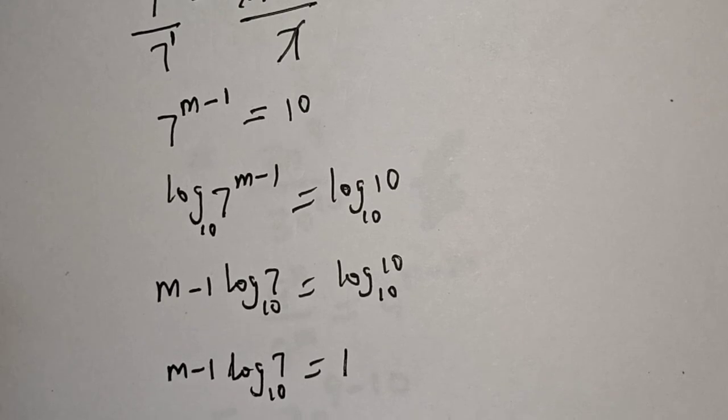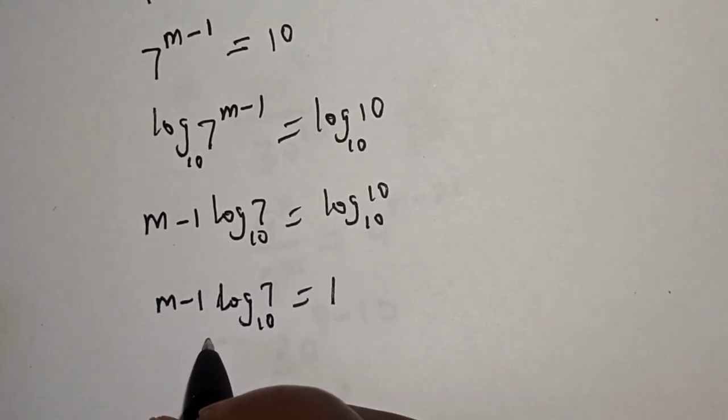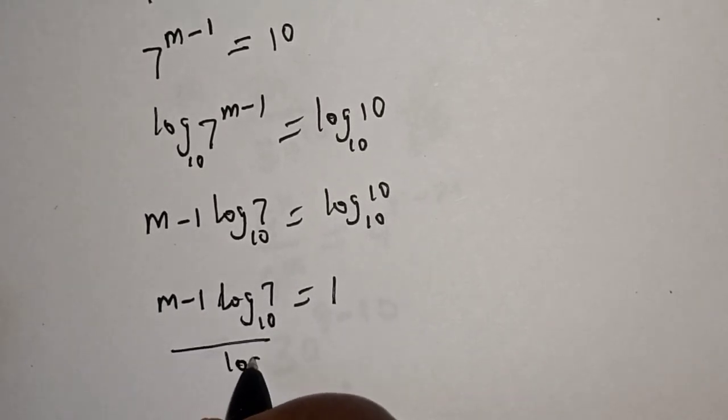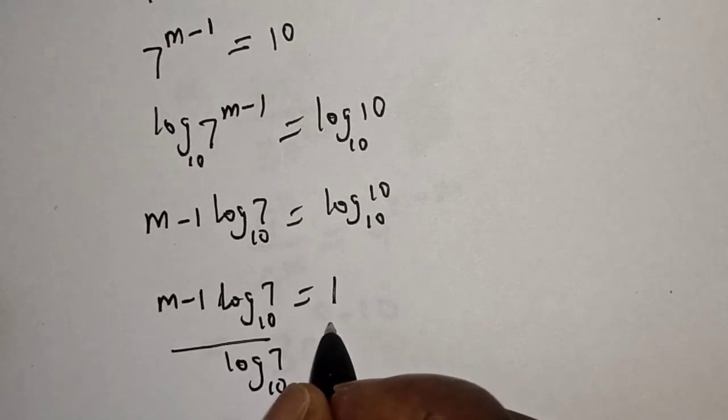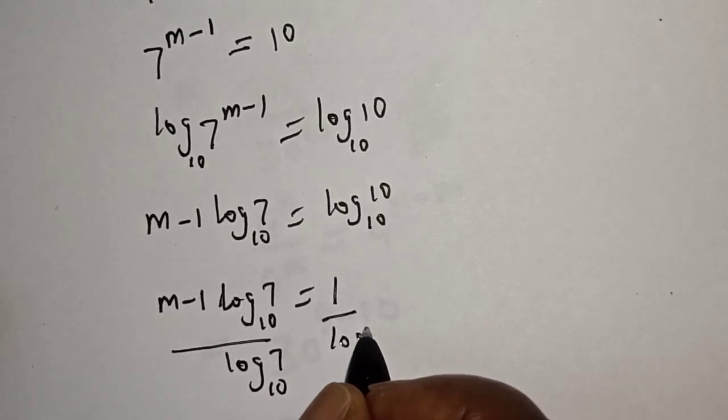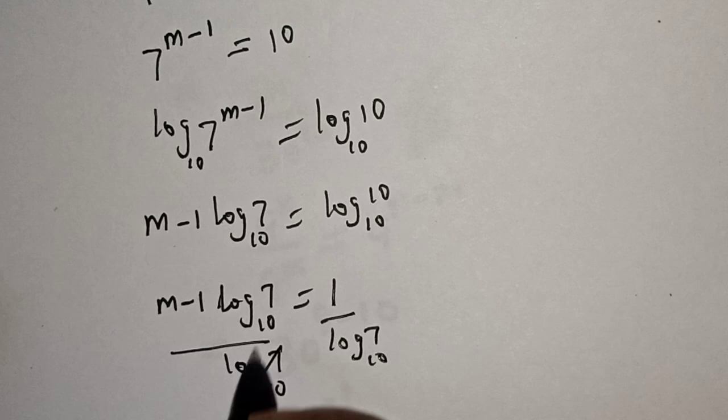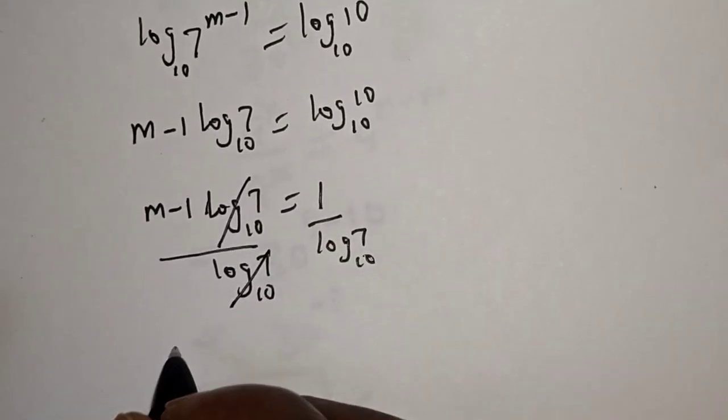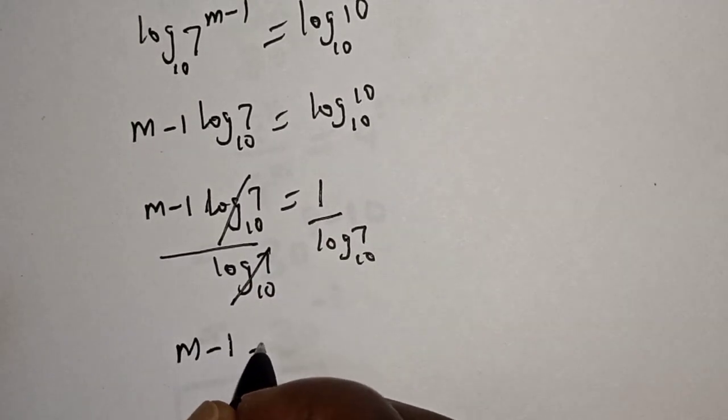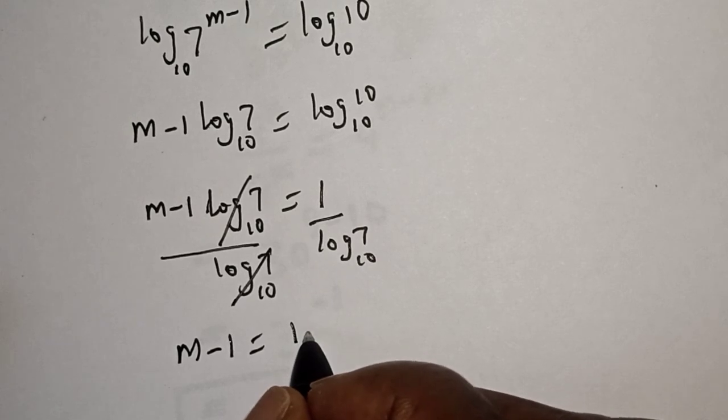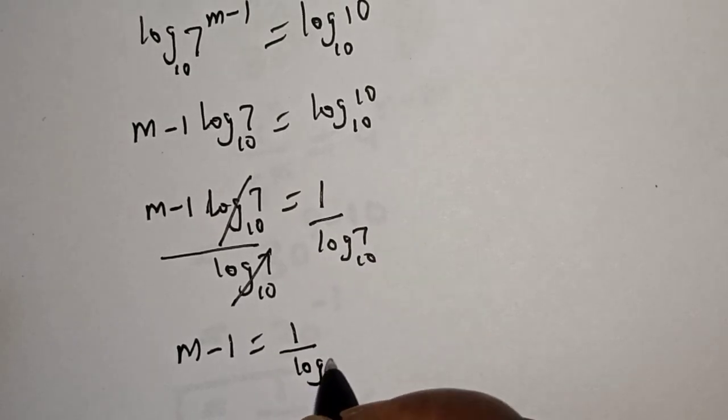Now let's divide both sides by log₁₀ 7. This one will cancel. M minus 1 is equal to 1 over log₁₀ 7.